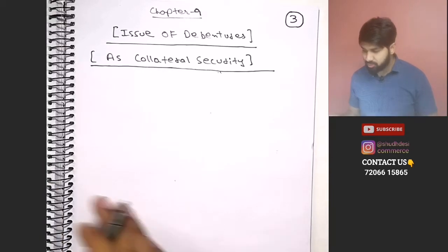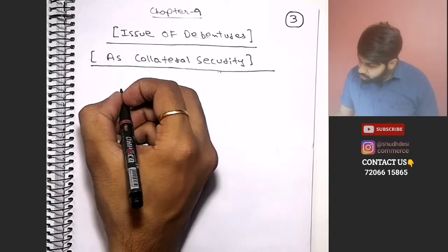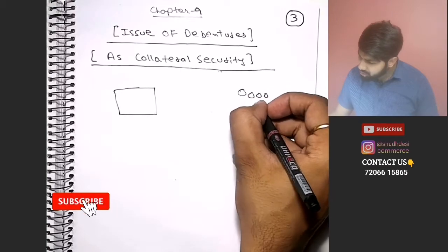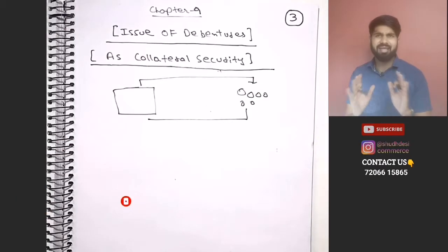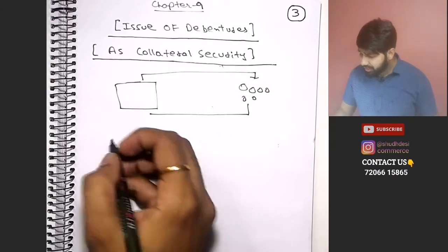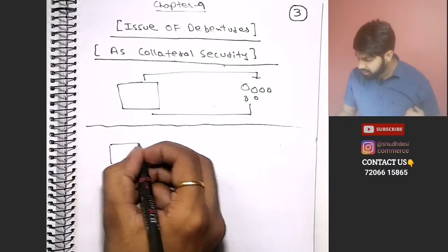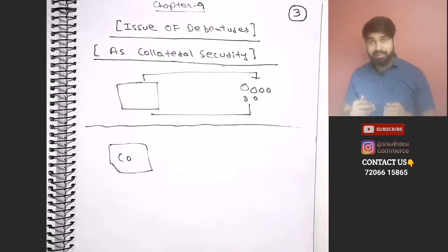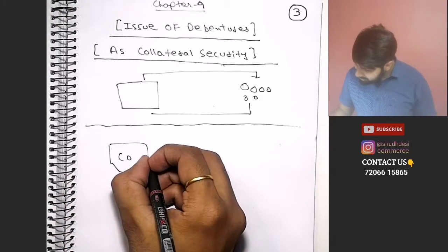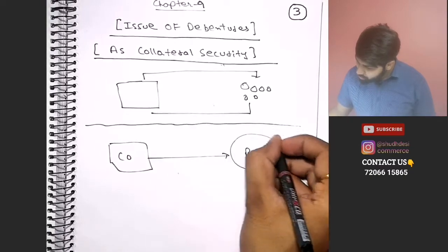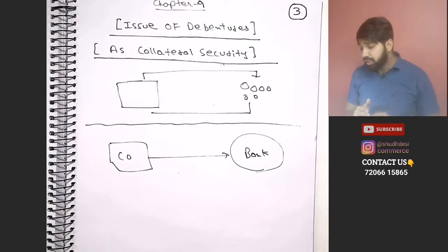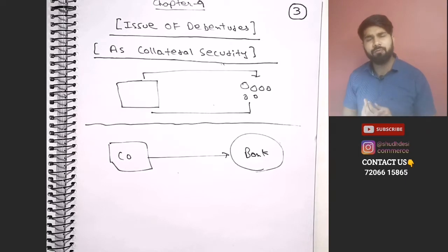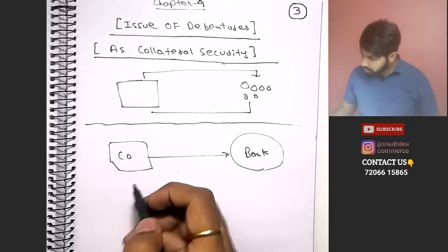So today we were learning: this is a company and these are Debenture Holders - they give money to the company. That is what we learned earlier. But today there is a new case. Today, the company is going to take a loan from a bank. This is our bank. Today the company will take a loan from the bank.